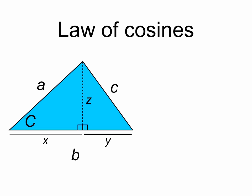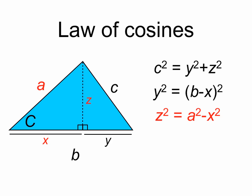Now we're going to use the Pythagorean theorem to say that c² = y² + z². Now y is also equal to b - x since x + y = b. We can square both sides to get y² = (b - x)². And again using the Pythagorean theorem we can show that z² = a² - x².